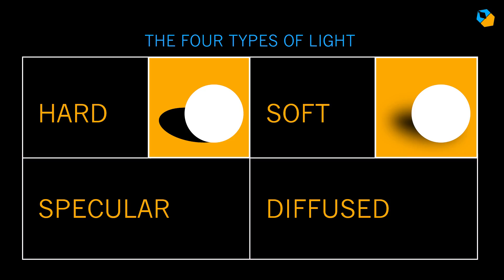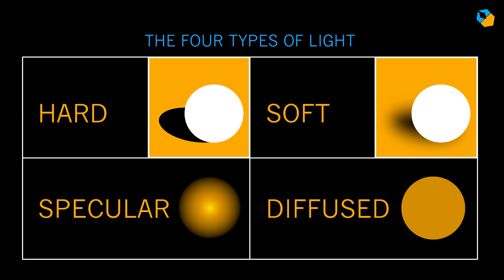I'm going to stop here, because the best way to really understand this is to practice lighting and see it for yourself. Remember, it's not just hard or soft light, but also specular and diffused light — four things. And knowing the difference takes you one step closer to cinematography mastery.